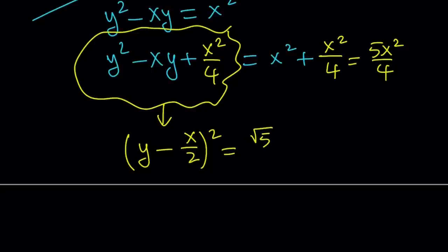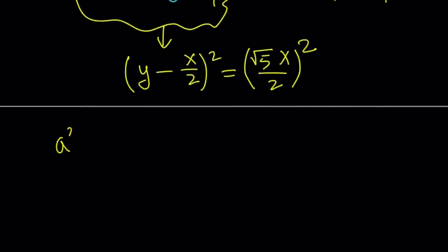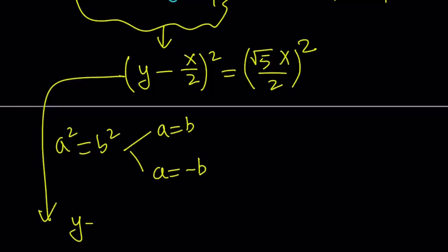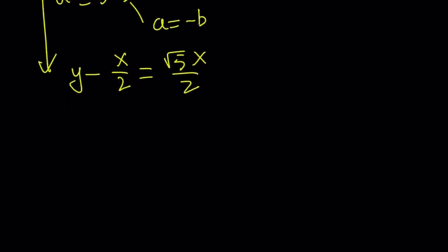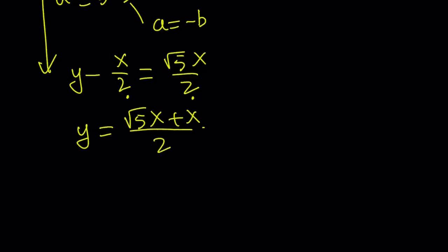5x squared over 4 can be written as square root of 5 times x divided by 2, quantity squared. So now we have squares on both sides. If a squared equals b squared, using difference of two squares, we get two solutions: either a equals b or a equals negative b. So y minus x over 2 equals root 5 times x over 2. Adding x over 2 to both sides gives y equals square root of 5 plus 1, divided by 2, multiplied by x.